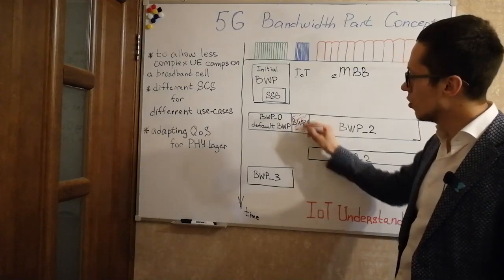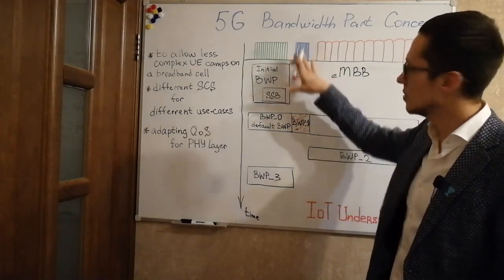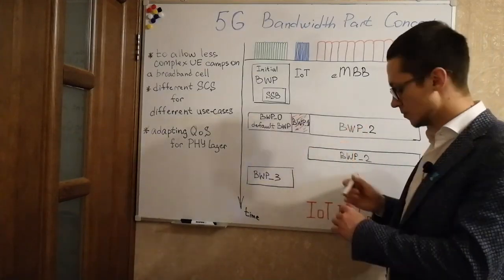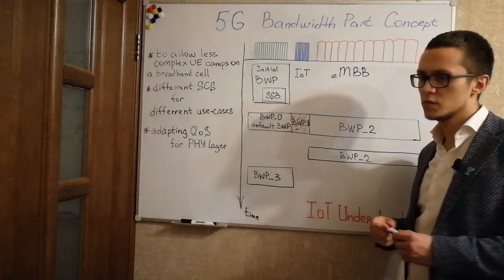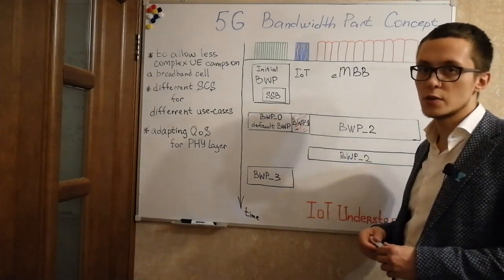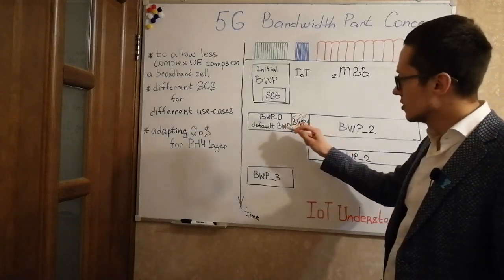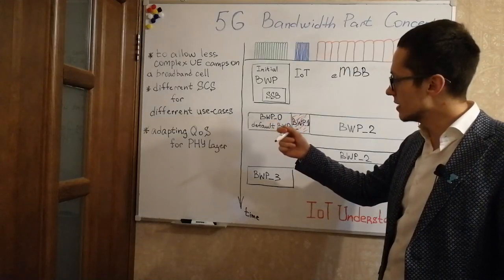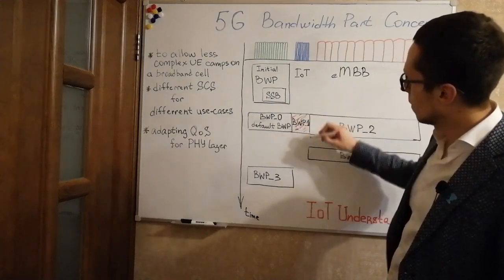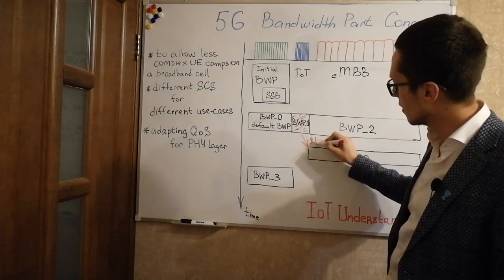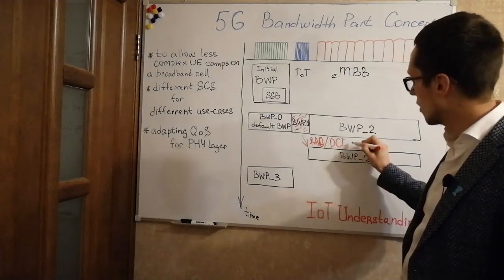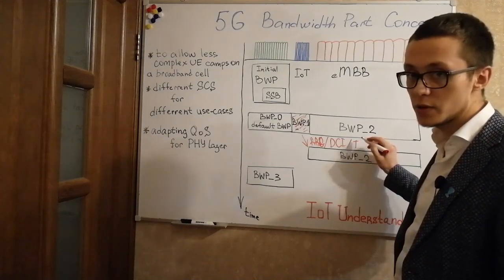However, only one bandwidth part with a particular subcarrier spacing can be active at a particular time. This is to make things less complex for UE vendors and UE equipment. While being in connected mode, UE can change its bandwidth part via RRC messages, DCI scheduling, or by inactivity timer expiry.